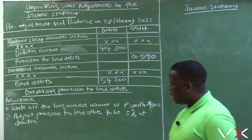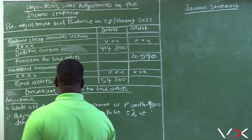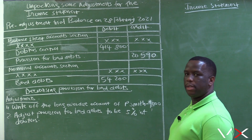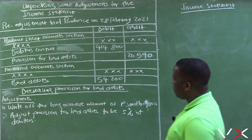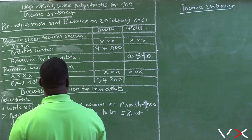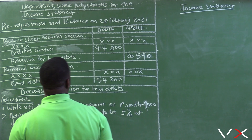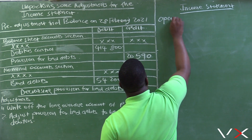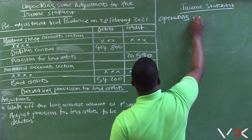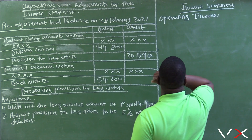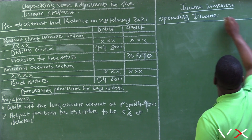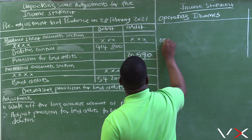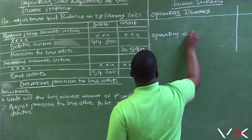The first adjustment says: write off the long overdue account of PeaSmith — 9,000. The two accounts involved with this adjustment are debtors control and bad debts. Bad debts will increase and debtors control will decrease. In your income statement, there is a section which deals with operating incomes and a section which deals with operating expenses.